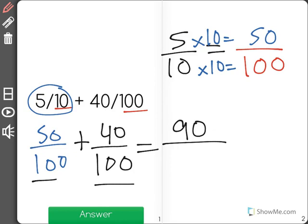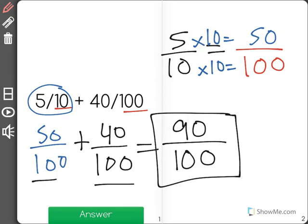Now remember when we add or subtract fractions the denominator doesn't change, only the numerator does. 90 out of 100 is our answer.